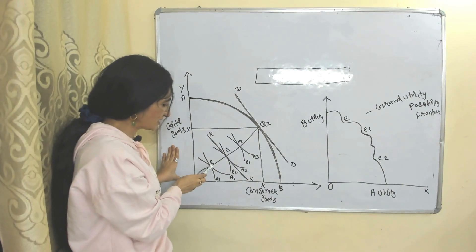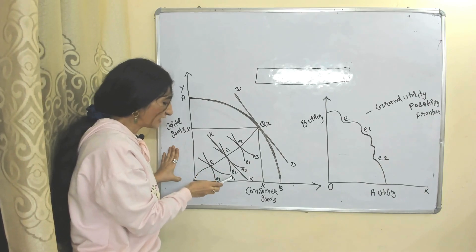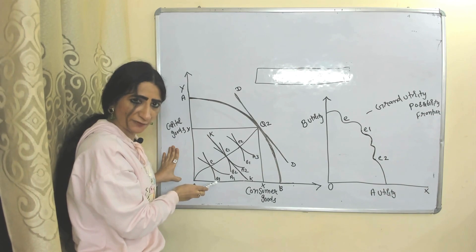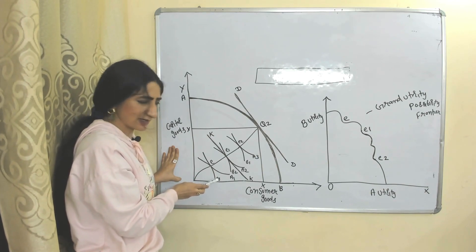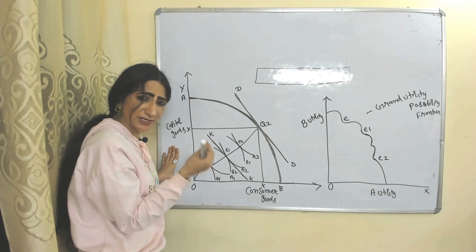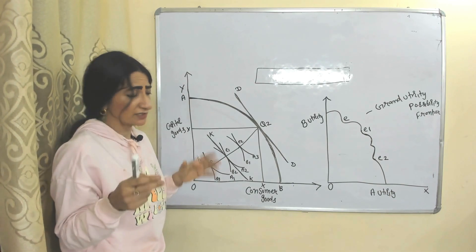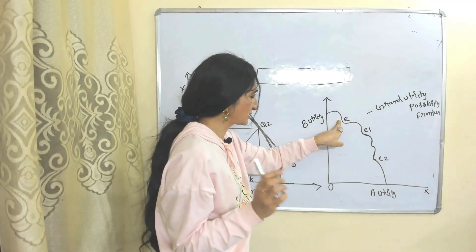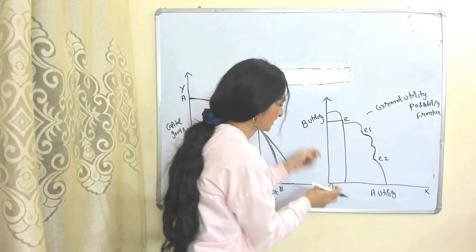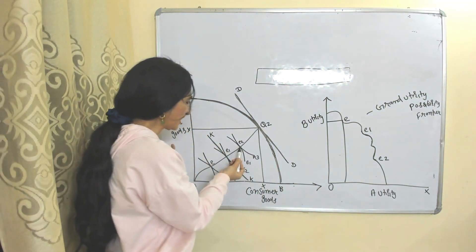We will bring these same points here. At point E, individual A has a lower indifference curve but B has a higher indifference curve — A has very low utility while B has very high utility. Similarly, at point E1, B has more utility but A has less utility.